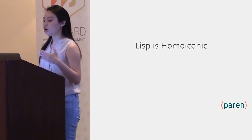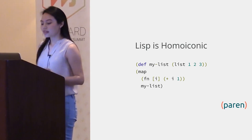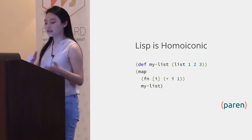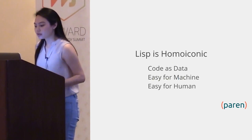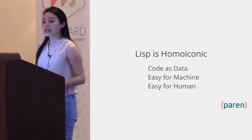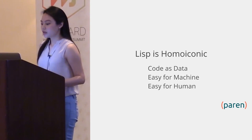Let's look at an example. I define my list as a list of 1, 2, 3. Then I call map on the list to manipulate it. Map is also in a list. The first argument is a function, and the second argument is a reference to the list I defined above. Lisp is easy for machines to process — it can process code the same way it would process any data structure. Believe it or not, Lisp is also easy for humans too. Once you develop a mental model to work with Lisp, you can apply it to anything because everything is just list processing.